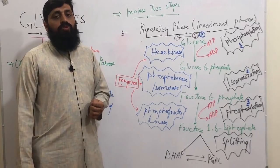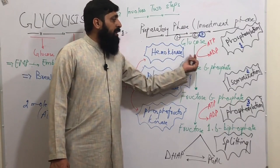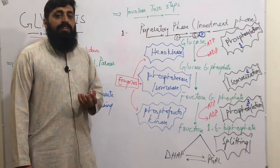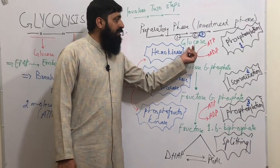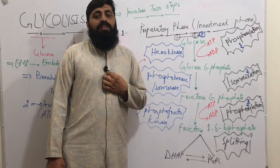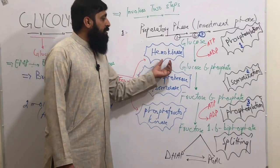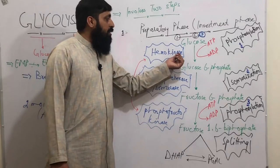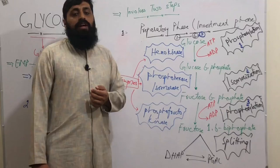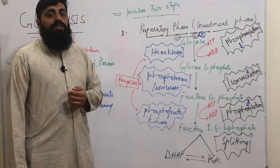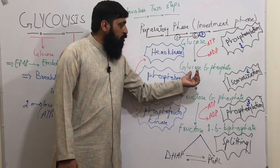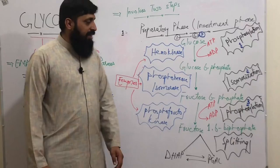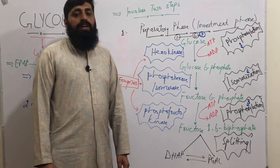Since this is an investment phase, one phosphate will be invested here. ATP is present, and that ATP — which had three phosphates with adenosine — donates one phosphate to glucose, becoming ADP (adenosine diphosphate), leaving two phosphates. The enzyme helping in this reaction is hexokinase enzyme. The first compound formed will be glucose-6-phosphate — six referring to the sixth carbon where phosphate is attached. The phosphate came from ATP, which becomes ADP.